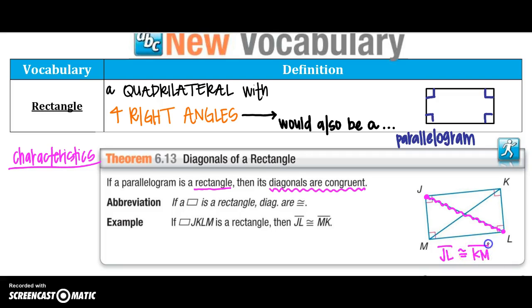So we know that from J to L, that whole length is congruent to the other whole length of the diagonal KM. So if the diagonals are congruent, then it's a rectangle. Now remember that because it's a parallelogram, I also have them bisecting each other at their midpoint, so those four sections are also all congruent as well.